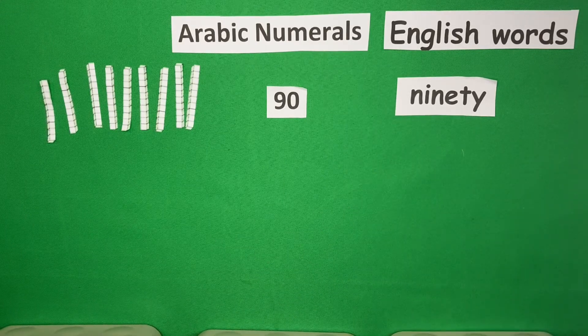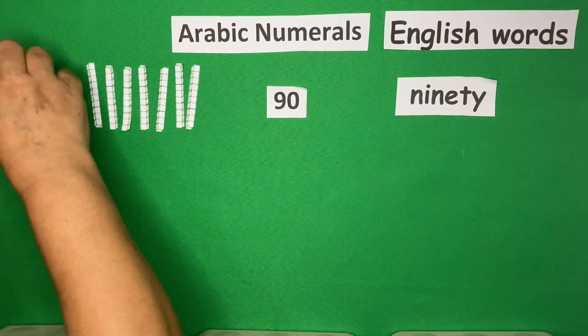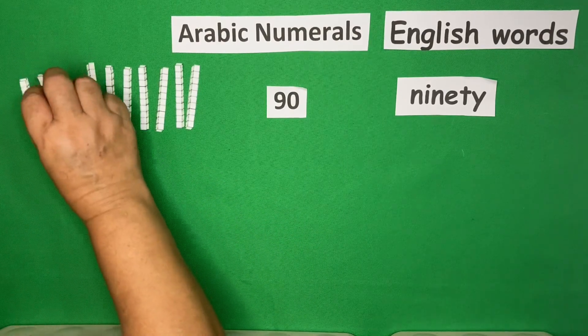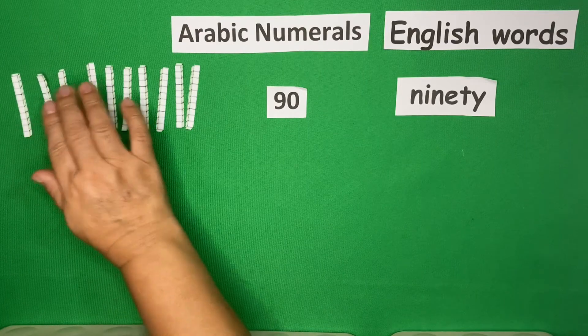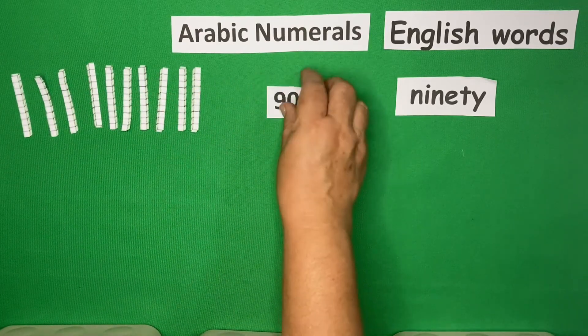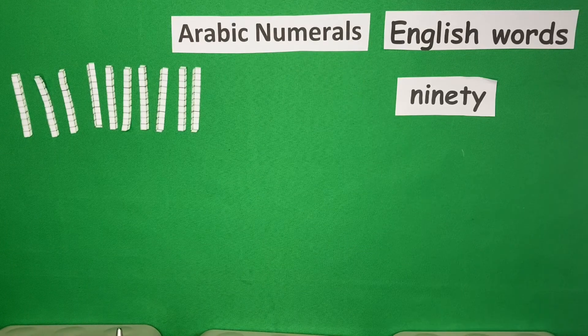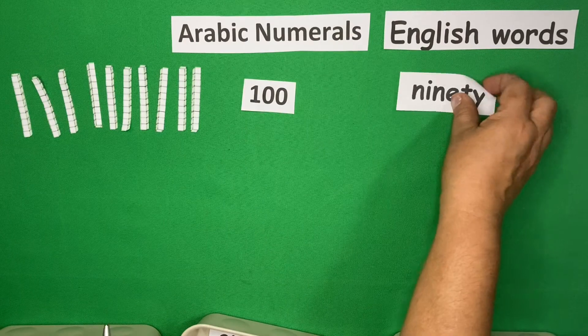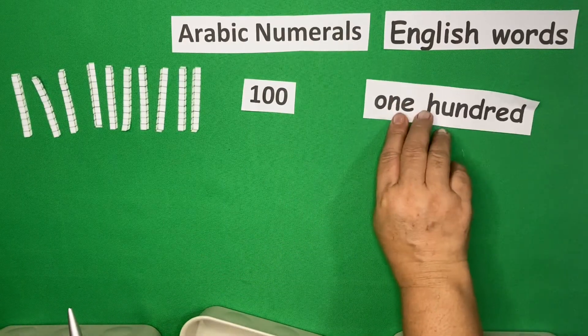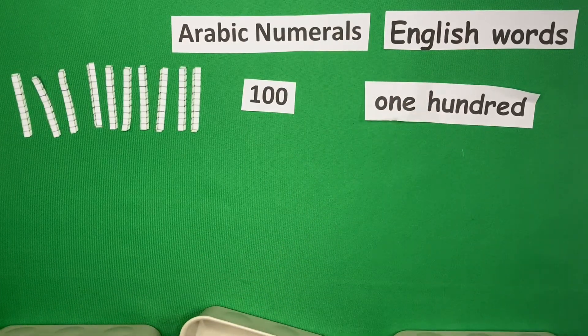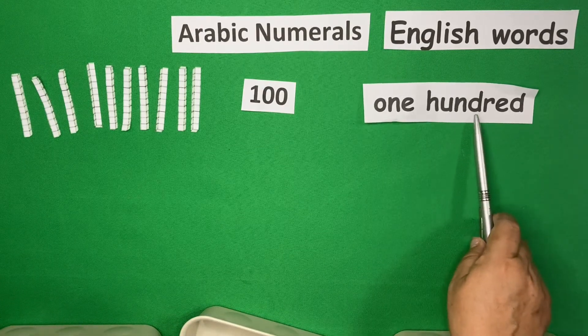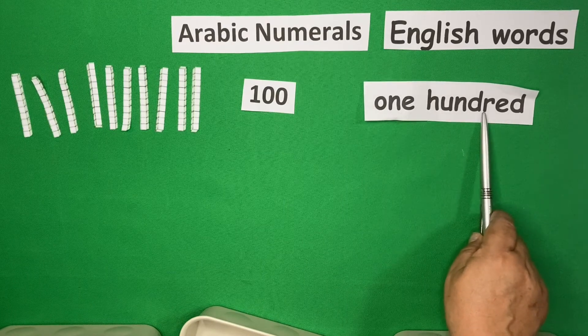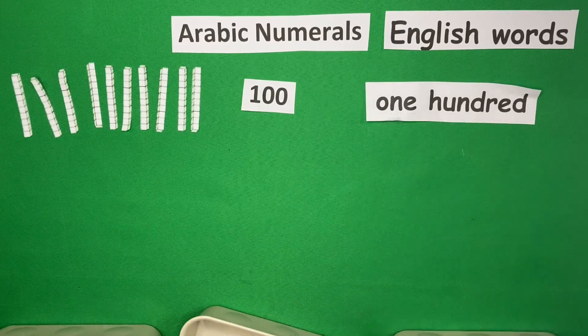Now, if there are 10, we won't say that it is 10-T. No. But, it is now, in Arabic, 100. And in words, it's one, O-N-E, and hundred, H-U-N-D-R-E-D, 100.